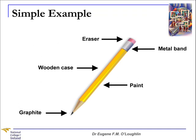Let's take a look at a simple example of a pencil. A pencil can be divided into five parts. At the tip, we have the graphite, whose function is to make marks. We then have the wooden case, whose function is to hold the graphite. Next, we have the eraser, whose function is to remove marks. We have a metal band, whose function is to hold the eraser. And finally, the paint, whose function is to protect the pencil and perhaps improve its appearance or carry a logo.